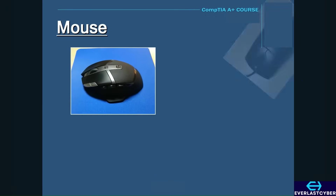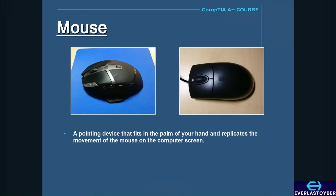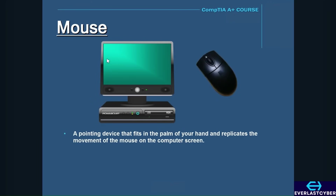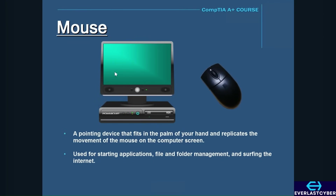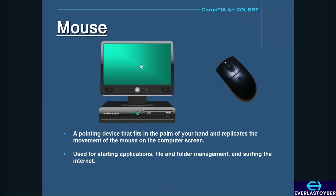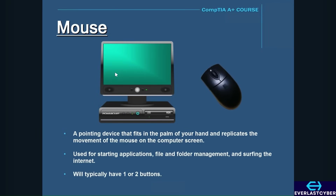A mouse is another basic input device used on a computer. It is a pointing device that fits in the palm of your hand and replicates movement onto the computer screen. It is used for things like starting applications, file and folder management, and surfing the Internet. A mouse will typically have one or two buttons — a Macintosh mouse will have one button, while a Windows mouse will have at least two.